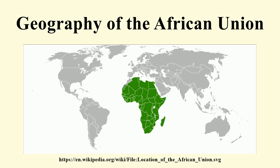The African Union presently has an area of 29,922,059 square kilometers, with 24,165 square kilometers of coastline. The vast majority of this area is on continental Africa, while the only significant territory off the mainland is the island of Madagascar, accounting for slightly less than 2% of the total.